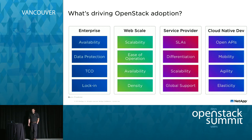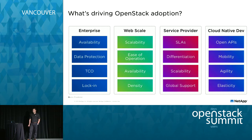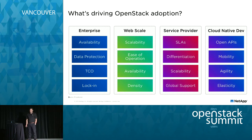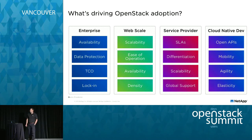We need to classify people into a few categories to understand what's driving OpenStack adoption today. You might be an enterprise customer where major concerns are availability, TCO, and avoiding vendor lock-in. You might be building a web-scale architecture focused on ease of operation and density. If you're a service provider, it might be SLAs and differentiation to compete in the market. Or you might be in DevOps, building cloud-native applications where you're concerned about open APIs, elasticity, and agility to bring products to market faster.